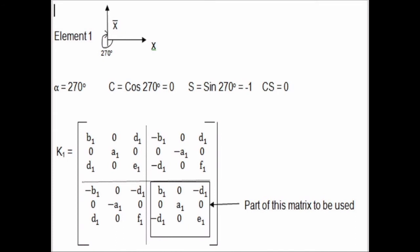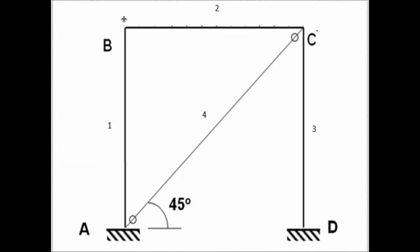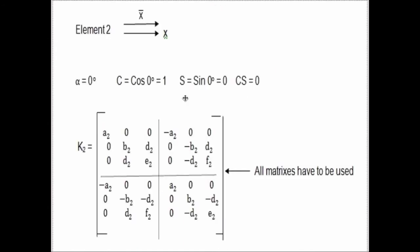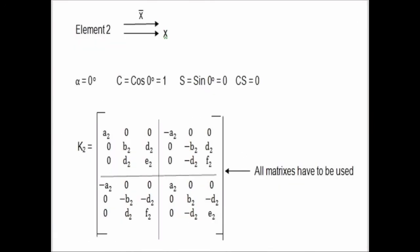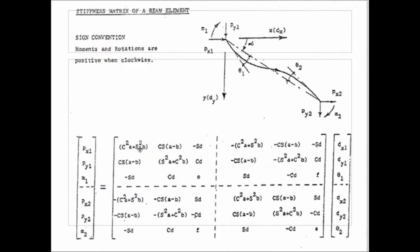Now I have to find the matrix for element BC. In that case, BC will be here. The X origin is here, so the angle will be 0 or 180 degrees. C = cos 0° = 1, S = sin 0° = 0. Just as we did for the earlier element, we have to substitute C and S values into the equation. So substituting C = 1 and S = 0.